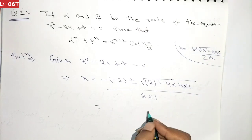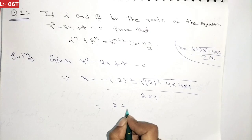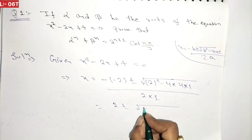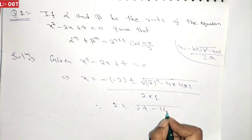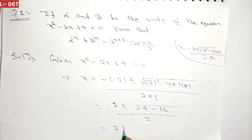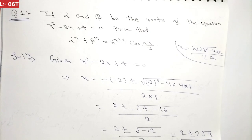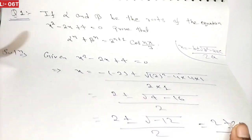Putting the values: x equals 2 plus or minus root under 4 minus 16, all divided by 2. Now 4 minus 16 gives us root under minus 12, divided by 2, which equals 2 plus or minus 2 root 3 i, divided by 2. Taking 2 common and cancelling, we get x equals 1 plus or minus i root 3.